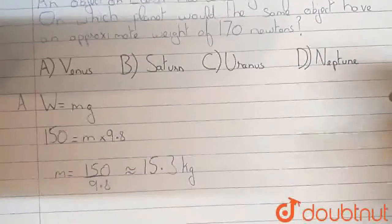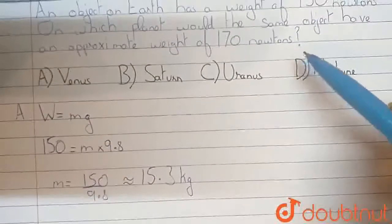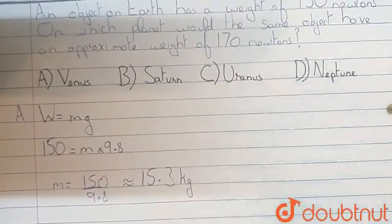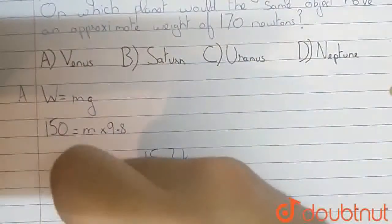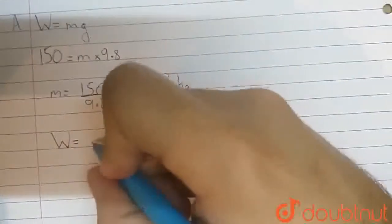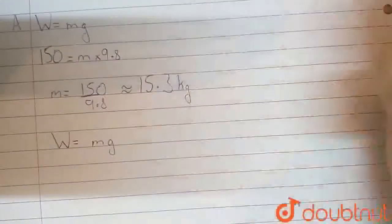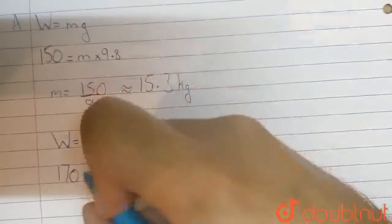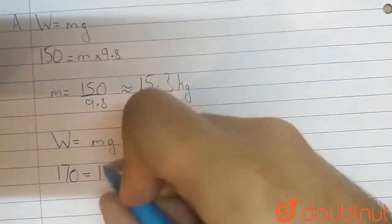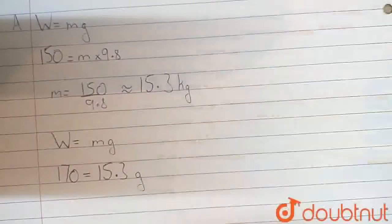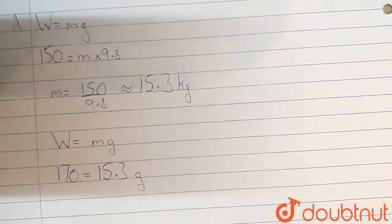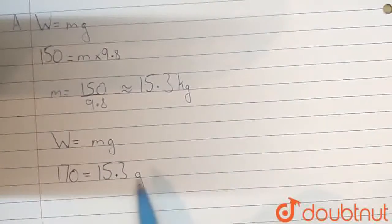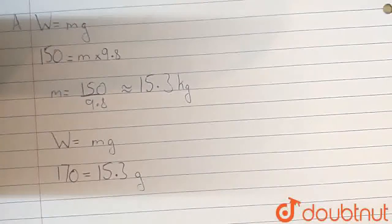So now, we are told that on which planet would the same object have an approximate weight of 170 newtons. If we again use the formula w is equal to mg, here we can write w as 170, the mass we have found out is 15.3, and we need to find out g. Once we find out this value of g for which the weight is 170, we can find out on which planet this g value corresponds, and hence we know which planet the object weighs 170 newtons.